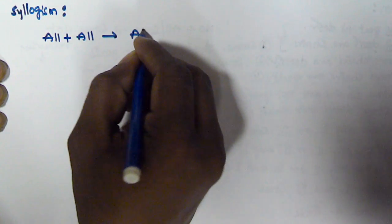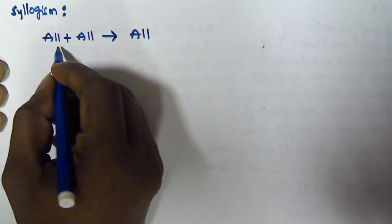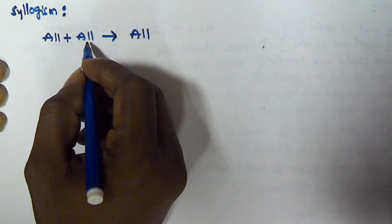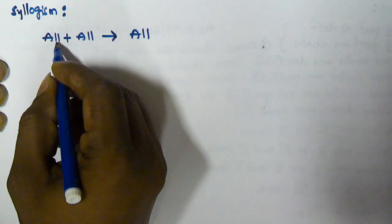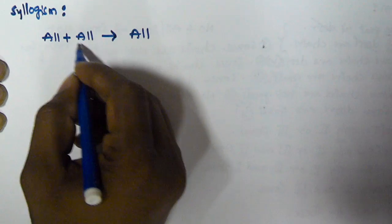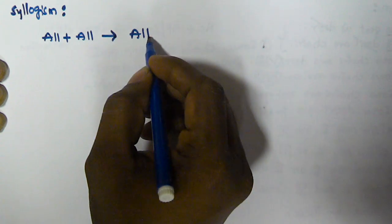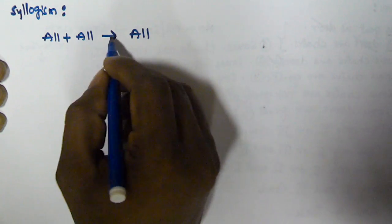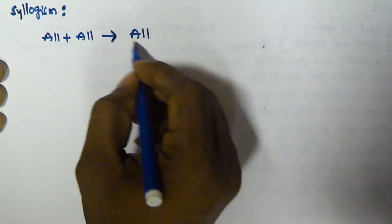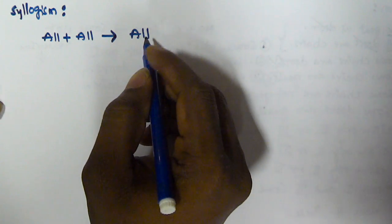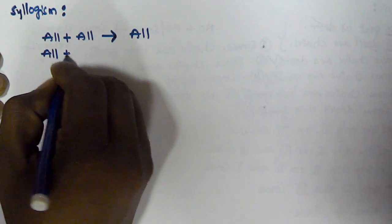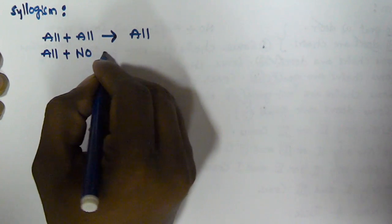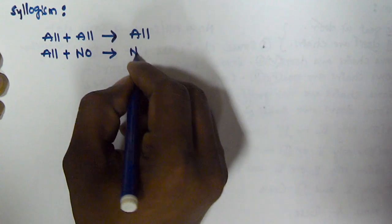So the first rule: All + All gives All. If the first syllogism starts with 'all' and the second also starts with 'all', and the predicate of the first statement is equivalent to the subject of the second, then the conclusion is going to start with 'all'. Whenever the first starts with 'all' and the second starts with 'no', the conclusion is going to start with 'no'.